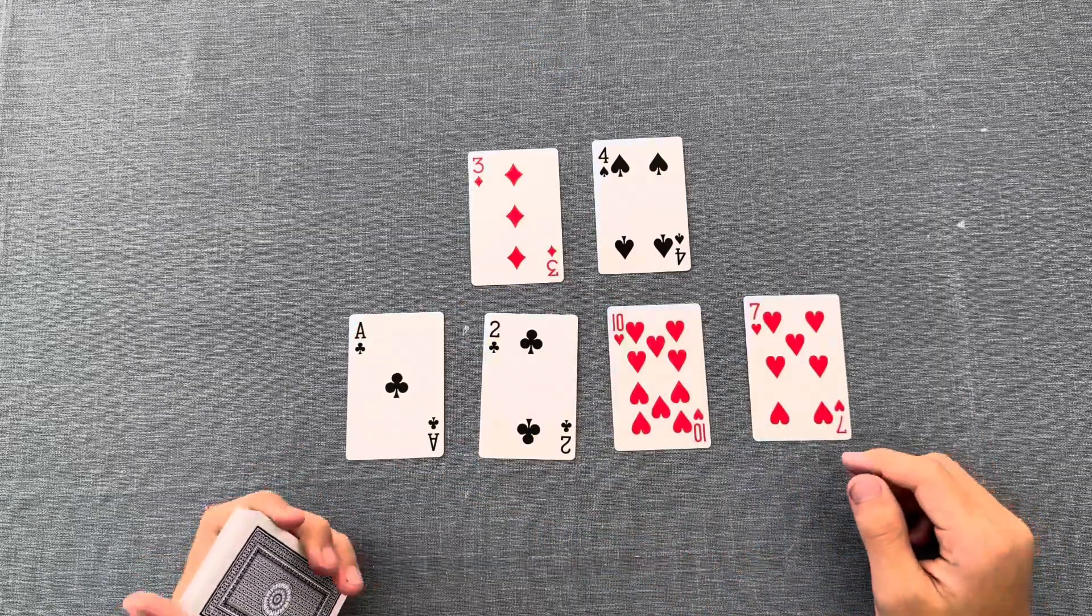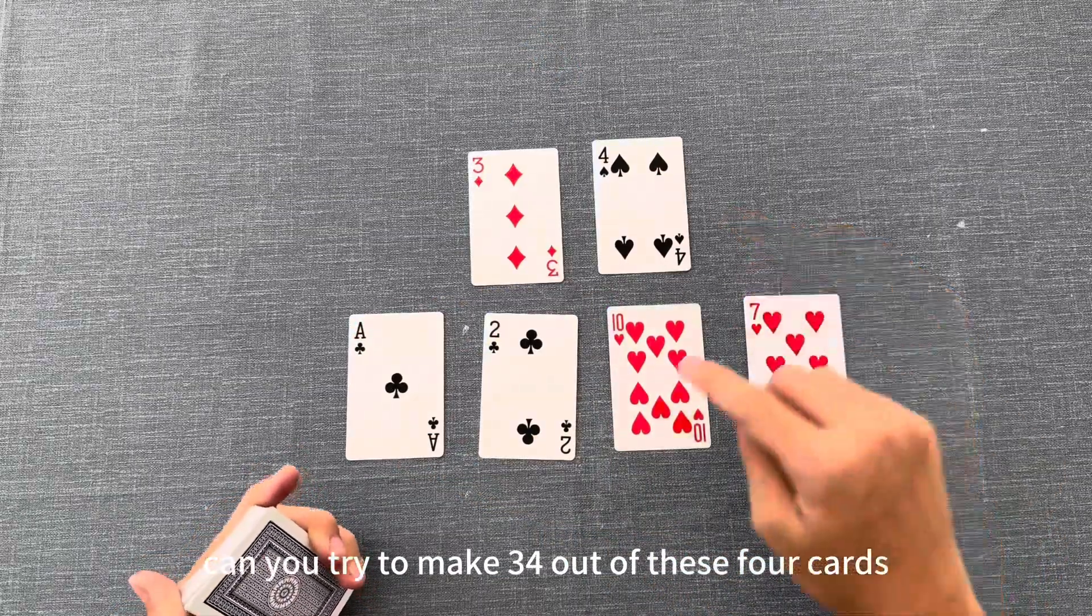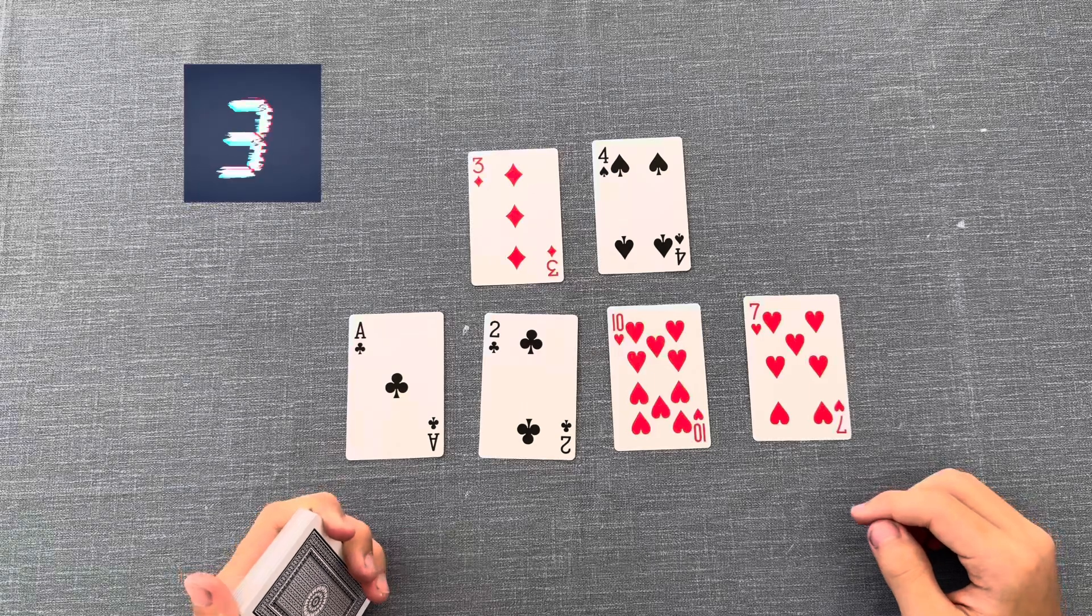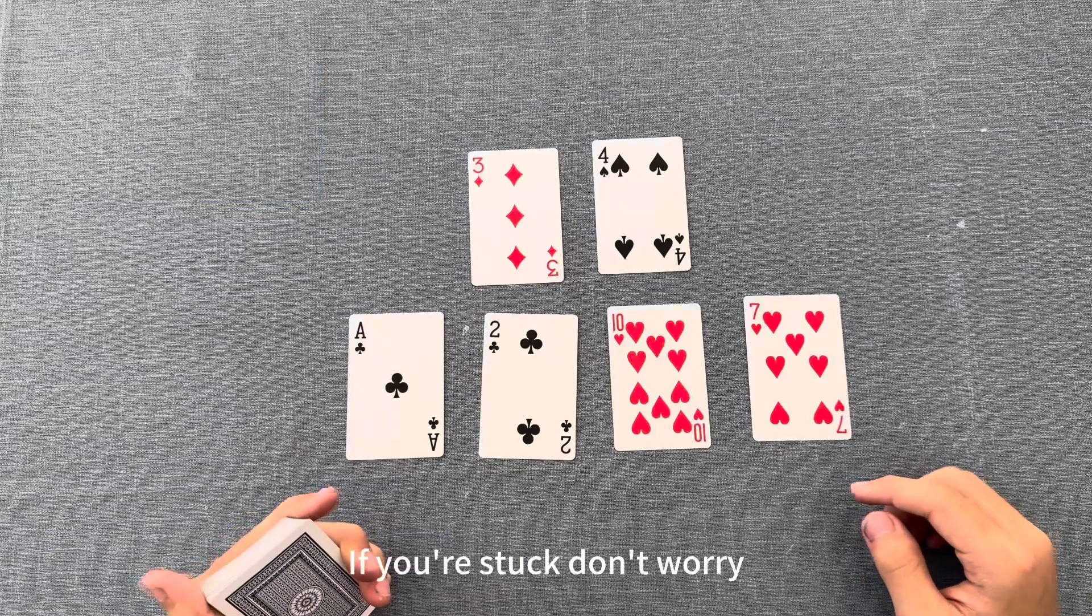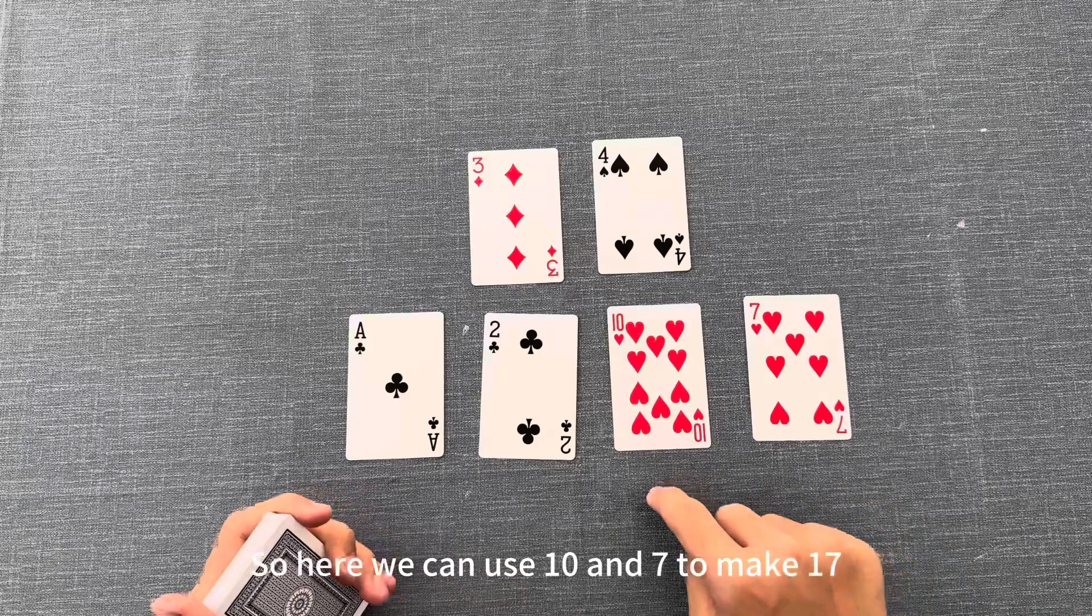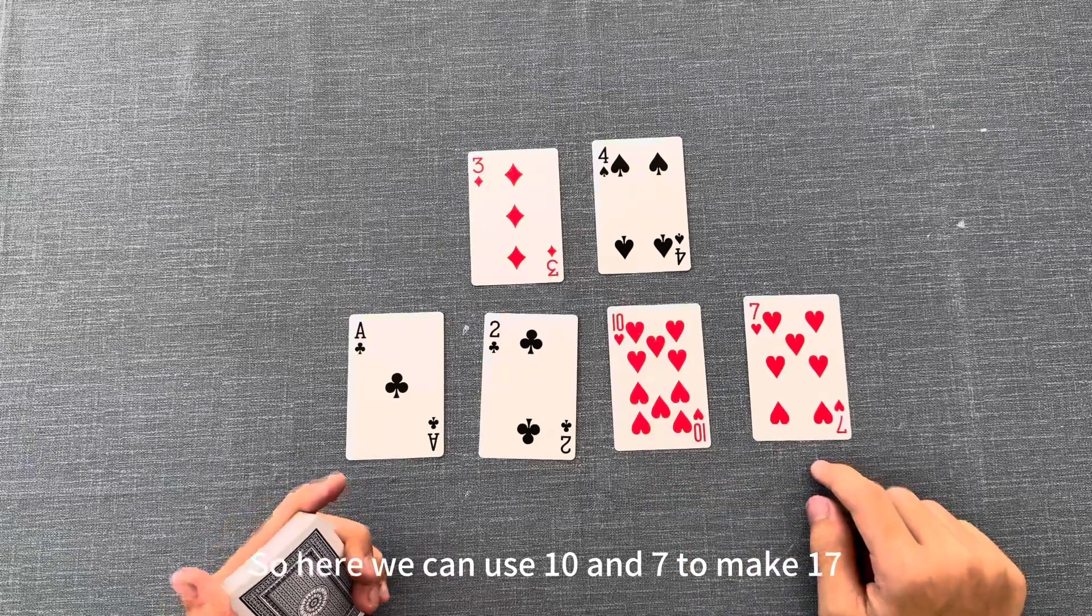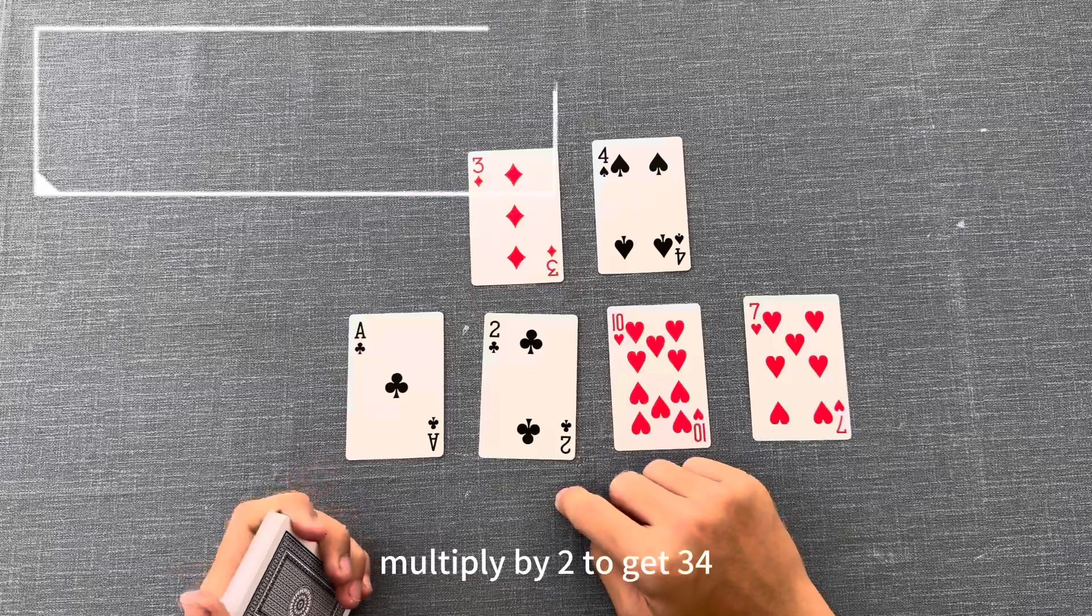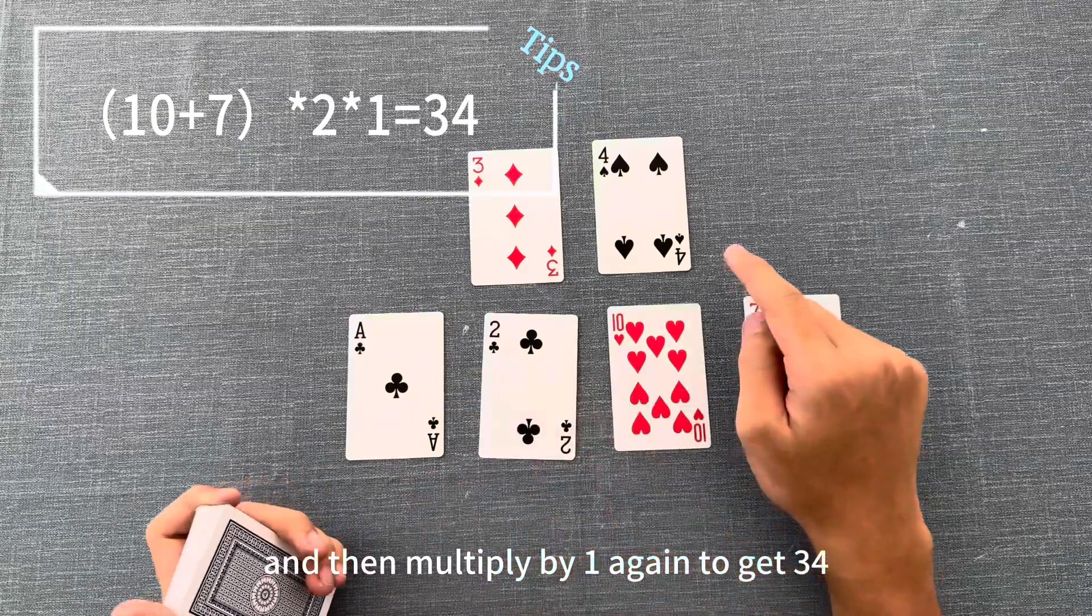Now that you know how to play, can you try to make 34 out of these four cards? If you're stuck, don't worry, I'll tell you the solution. Here we can use 10 and 7 to make 17, multiply by 2 to get 34, and then multiply by 1 again to get 34.